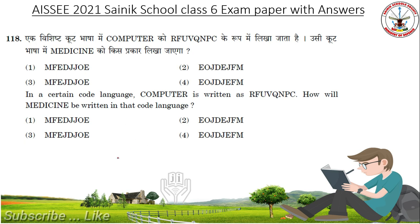In a certain code language, COMPUTER is written as R, F, U, V, Q, N, P, C. How will MEDICINE be written in that code language? Answer is Option 4: E, O, J, D, J, G, F, M.